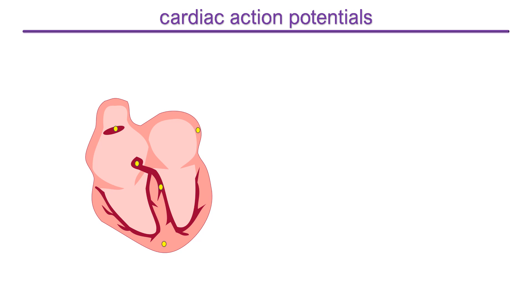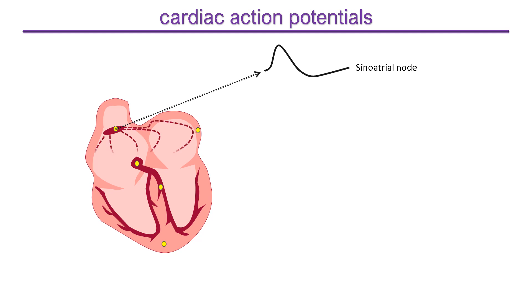The action potentials initiated at the sinoatrial node are specialised for pacemaking. The membrane potential changes continuously, not just during the action potential but also between action potentials. Conducting pathways spread the action potential to the atrial muscle cells where more distinct phases are apparent.